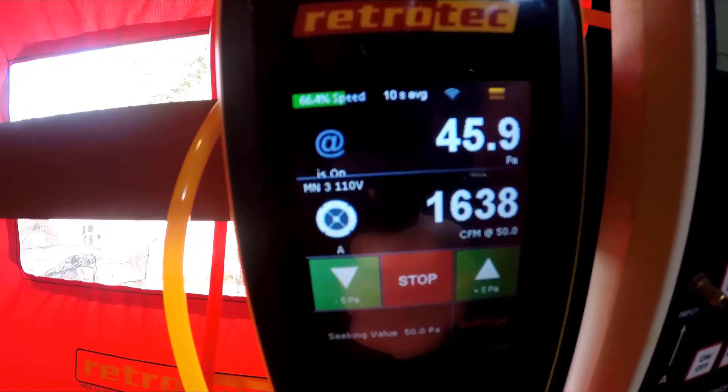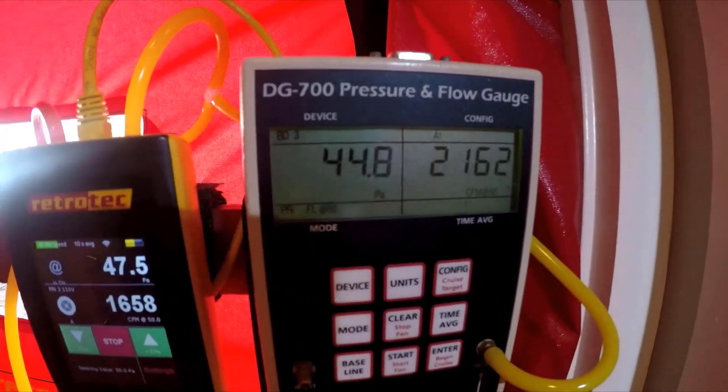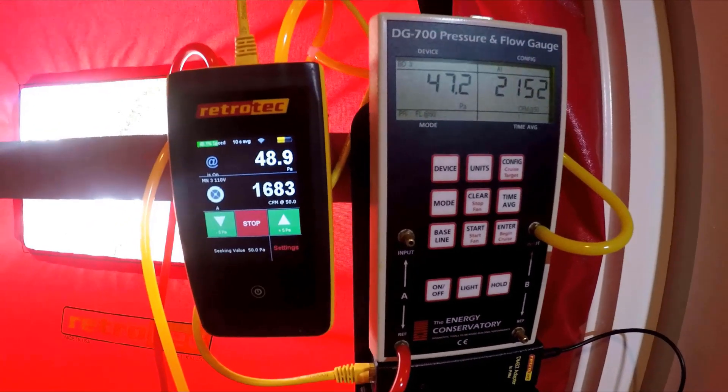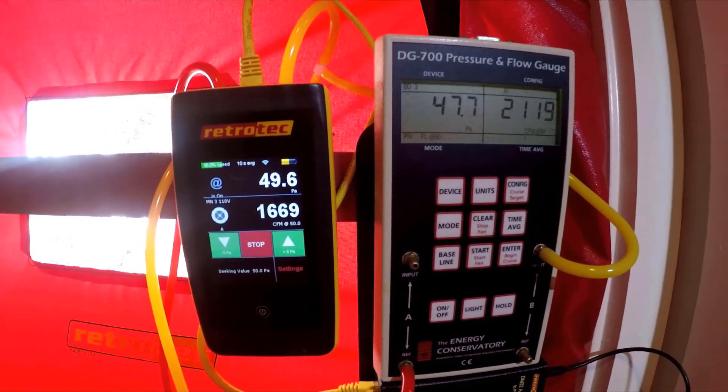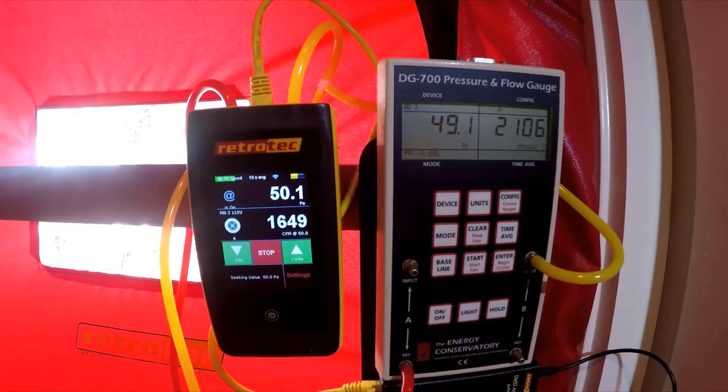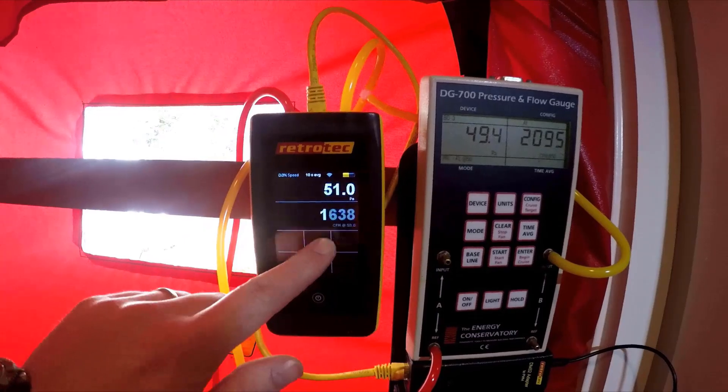And notice the difference that we have here in our readings. So we're almost to 50 or at about 1640 on the DM32 or over 2000 CFM on the DG700. So that's quite a big difference. Usually you'll have a reading that's 20% high in this scenario on the DG700 if that extra tubing is not connected.